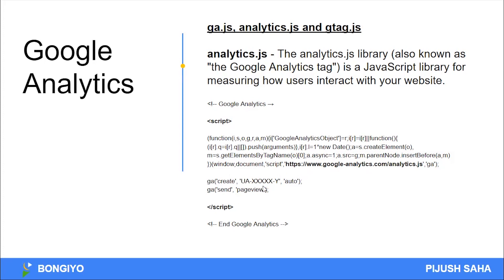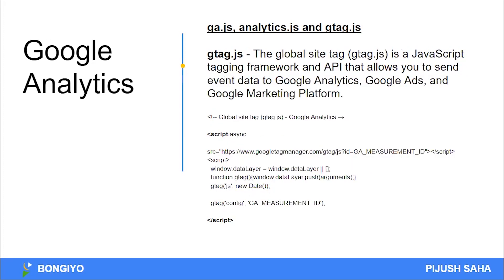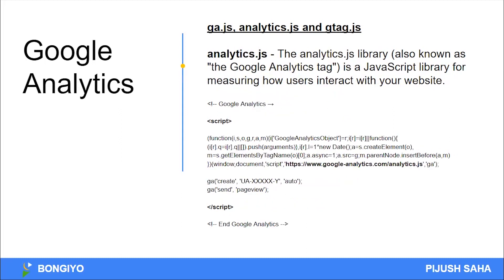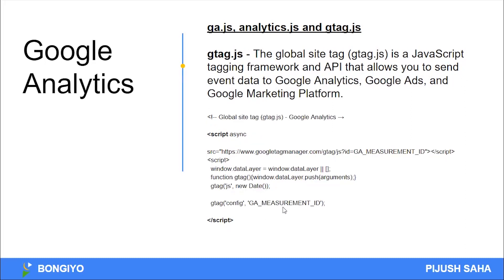There is a tracking code of Universal Analytics and you can send it the page view. The cookies are auto. gtag.js is a global tag. This is a JavaScript tagging framework and API that allows you to send event data to Google Analytics, Google Ads, and Google Marketing Platform. This is a data layer — Windows.DataLayer. The Universal Analytics tracking code uses a measurement ID — a GA measurement ID.